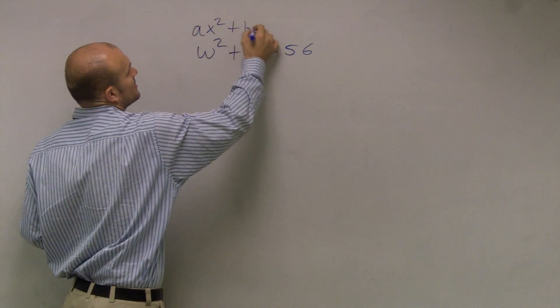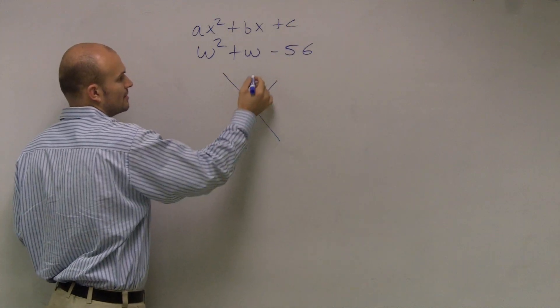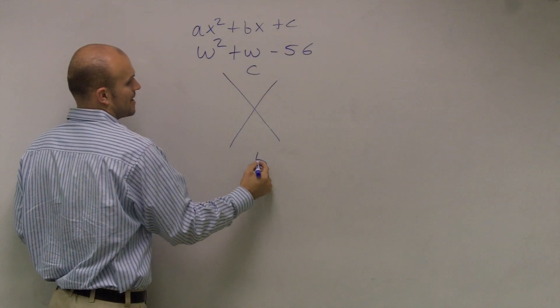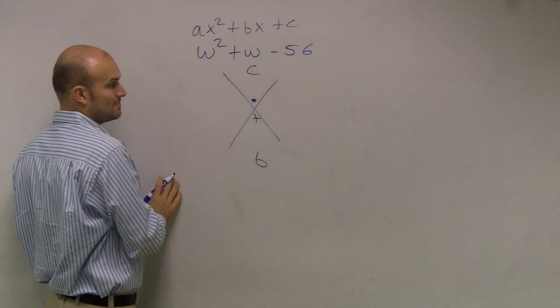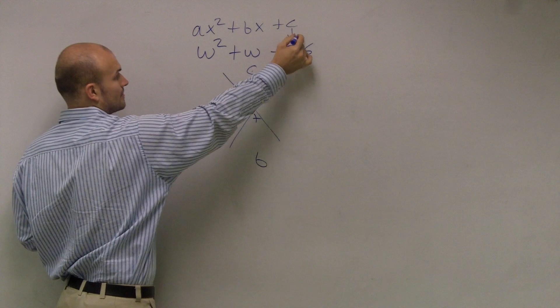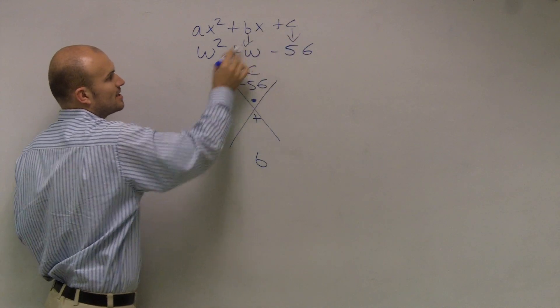ax squared plus bx plus c. So when I draw my little triangle here, I have my c up top, my b on bottom. c I'm going to multiply, b I'm going to add. My c is my number in front, which is the negative 56. And my b is my number in front of my w.